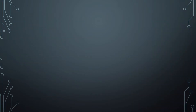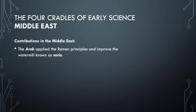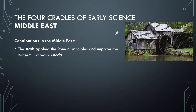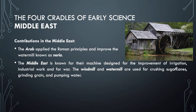Moving on to the Middle East — specifically the Arab world and India. The Arabs applied Roman principles and improved the water mill known as the noria, which you can see here as a wheel used for irrigation. The Middle East is known for machine design for improvement of irrigation, industrial work, and war. The windmill and water mill were used for crushing sugar canes, grinding grain, and pumping water.